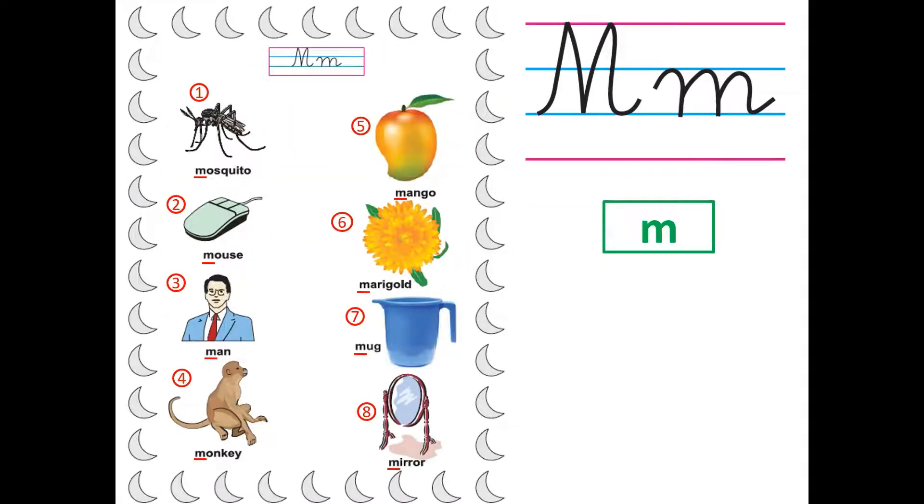Okay, first look at this. This is capital M in cursive. This is lowercase M in cursive. And this is print M. My children, when you are reading a book, you will see print M.